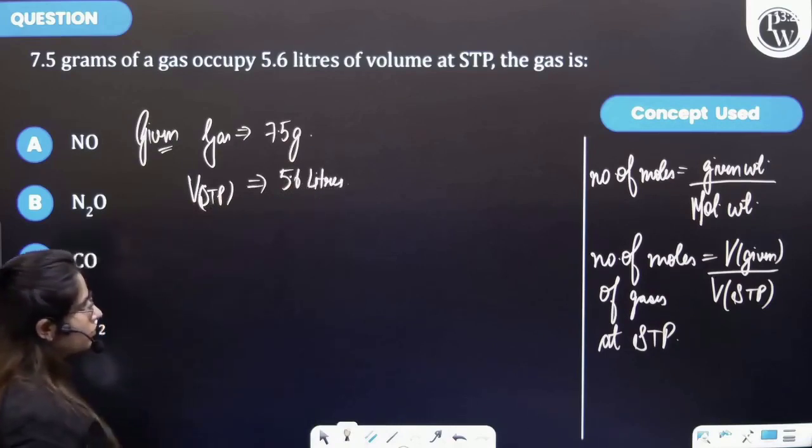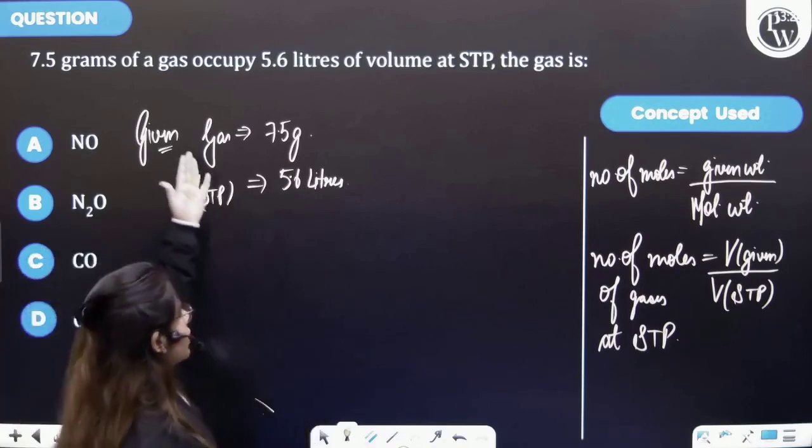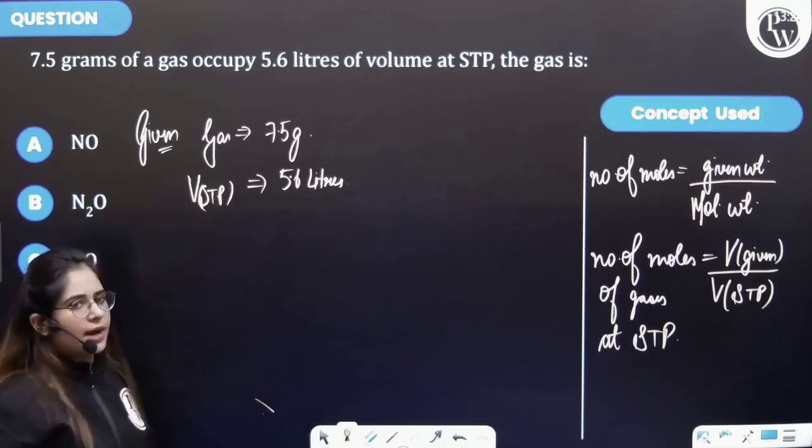Right? And they are asking for the gas which has these conditions. Its mass is this much and volume is 5.6 liters at STP.